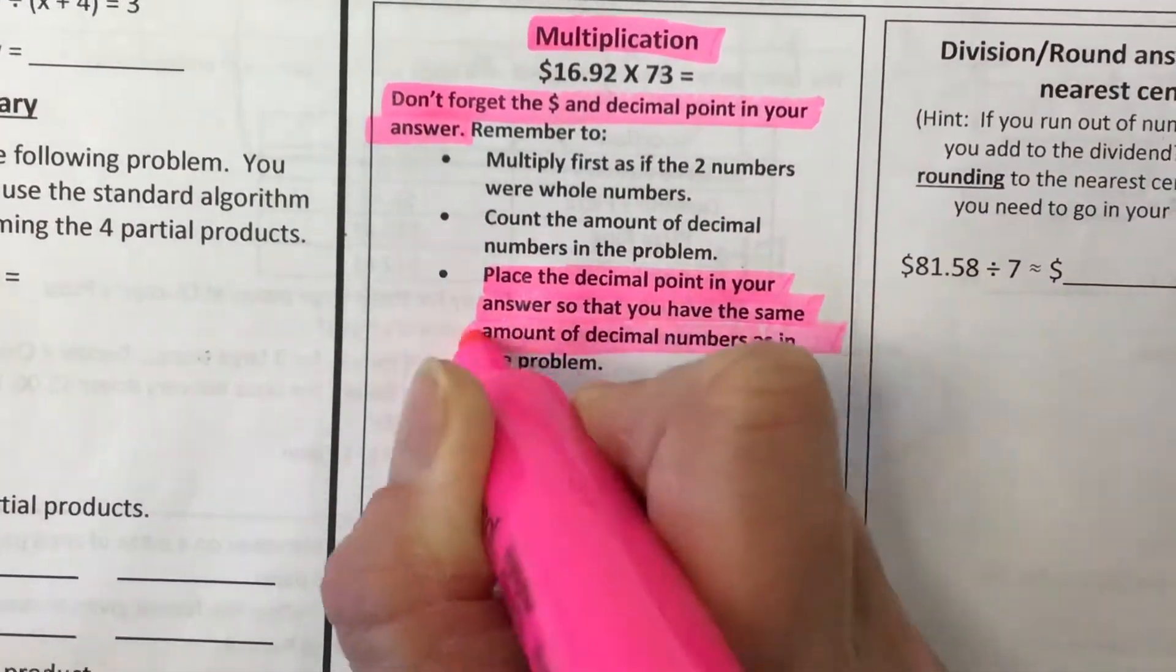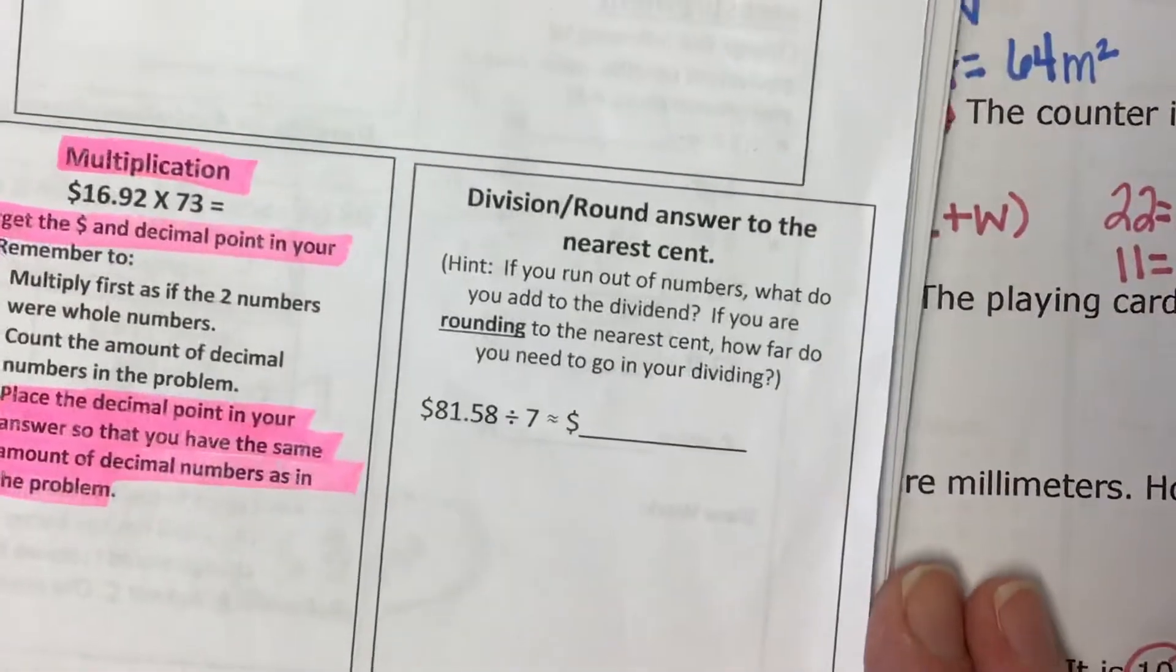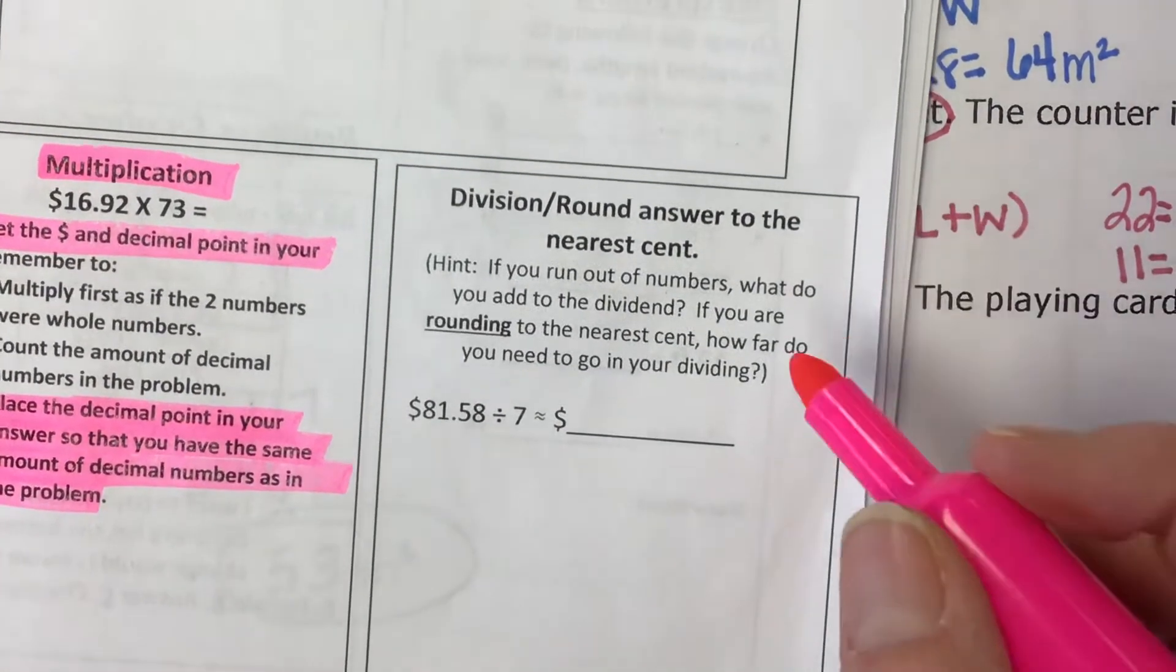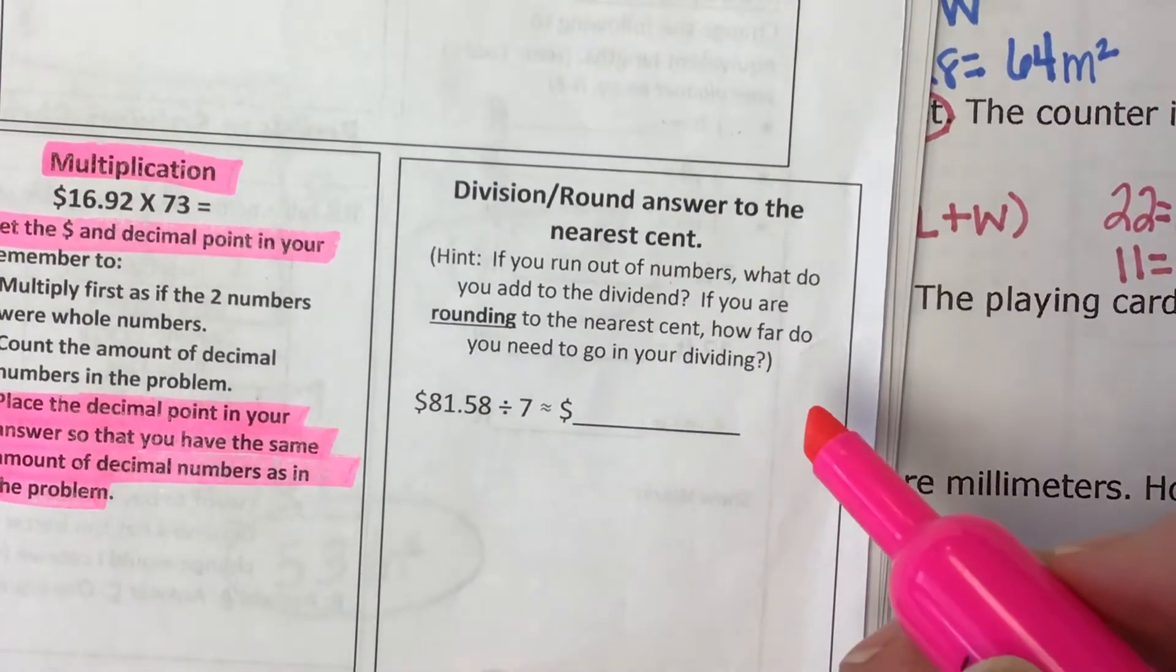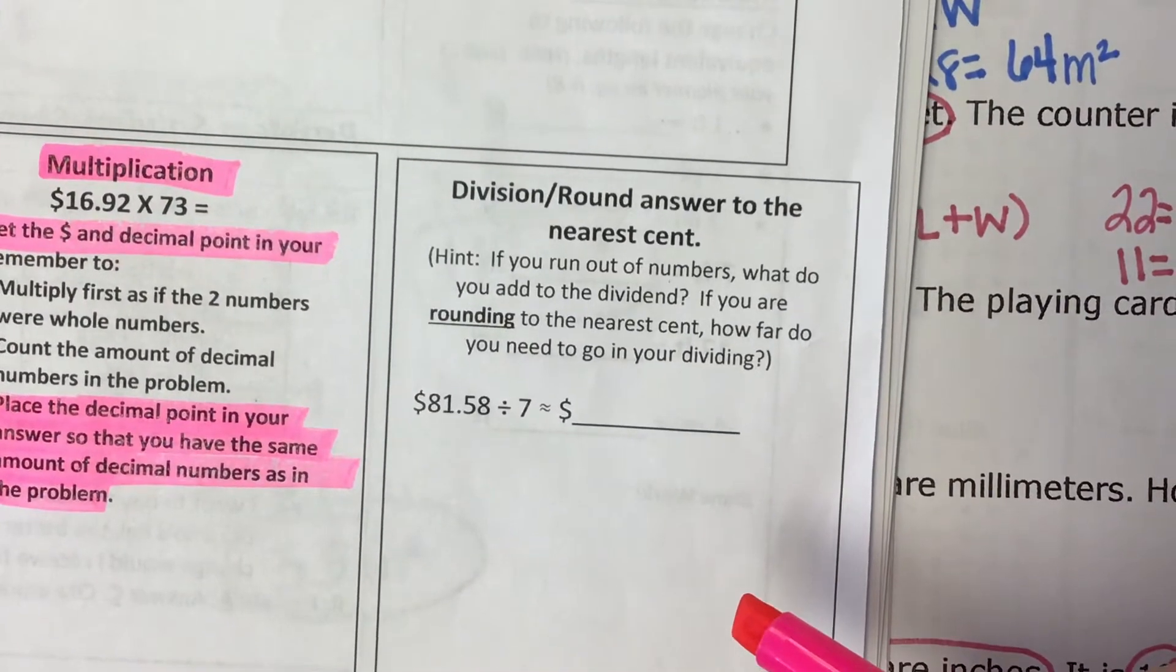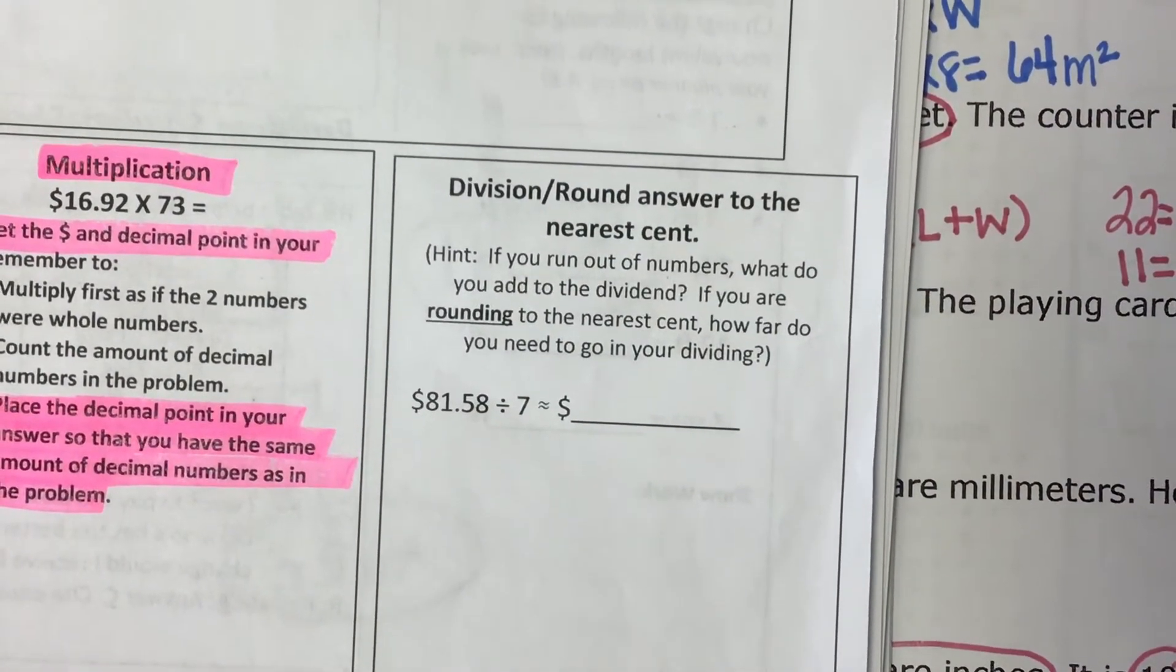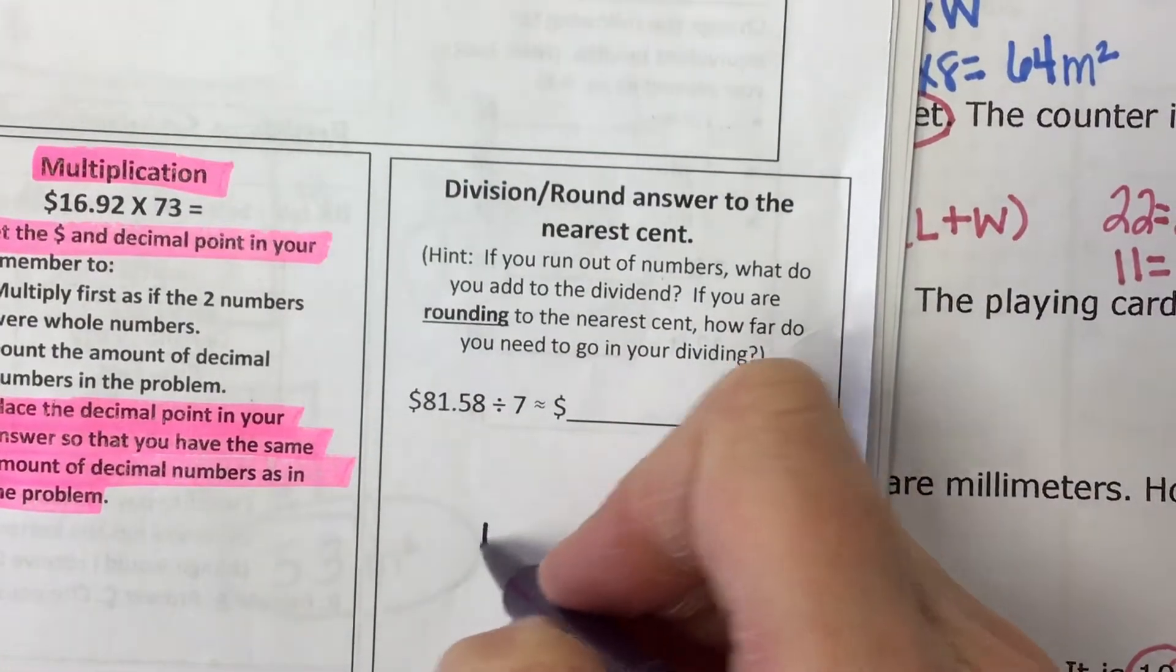Okay, if you need help with that, you want to turn this in before Friday. Division and rounding to the nearest cent. Hint, if you run out of numbers, what do you add to the dividend? If you are rounding to the nearest cent, how far do you need to go in your dividing? This one is tricky, and I think that I'm going to help you set it up. Okay? If you run out of numbers, what do you add to the dividend? Okay, let's go ahead and set this one up.